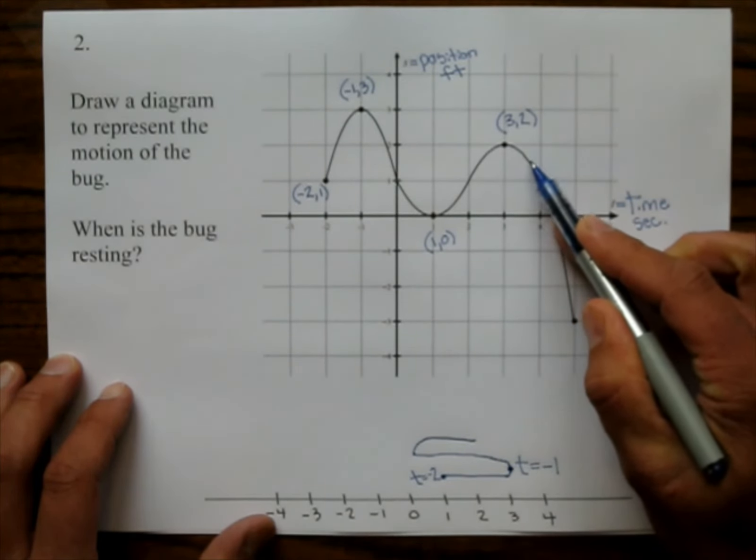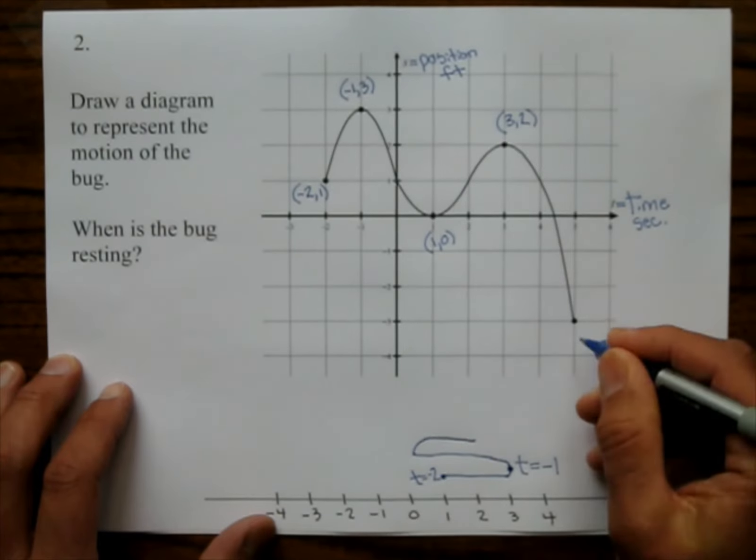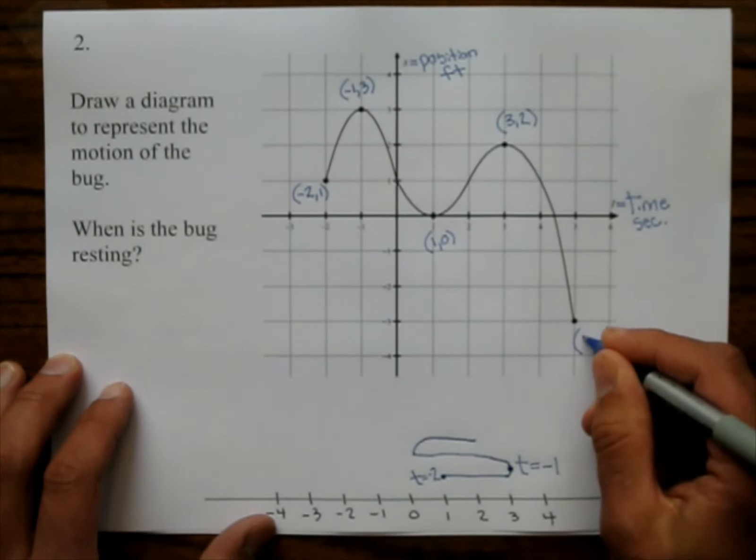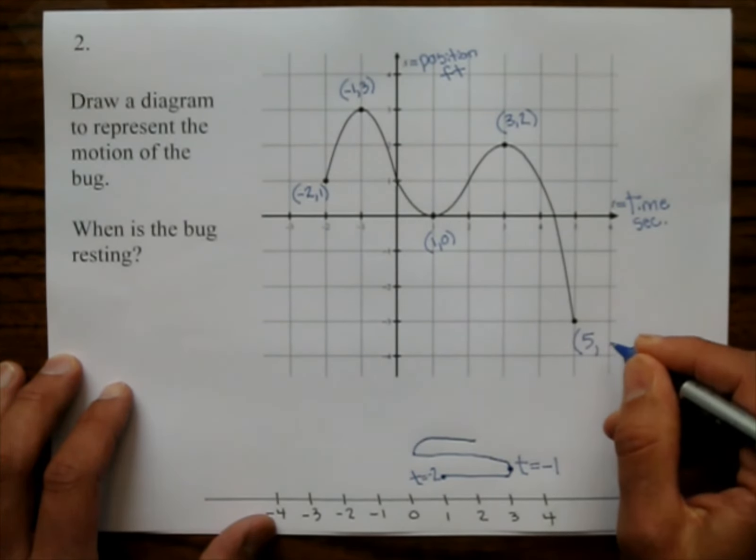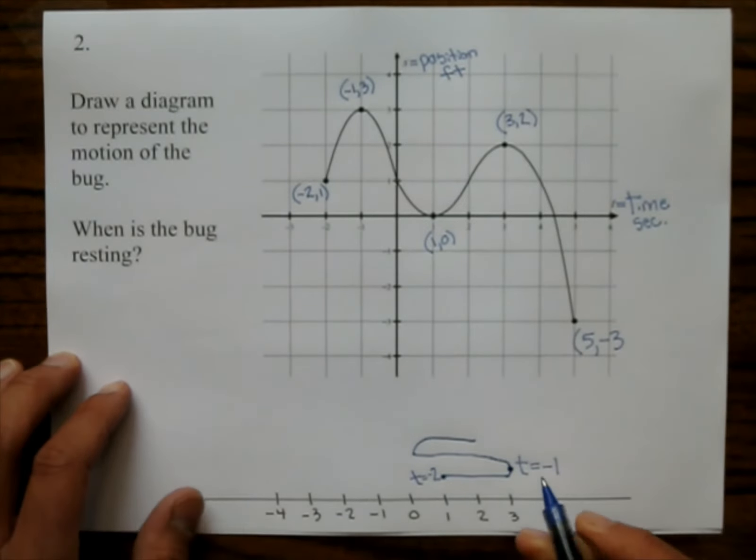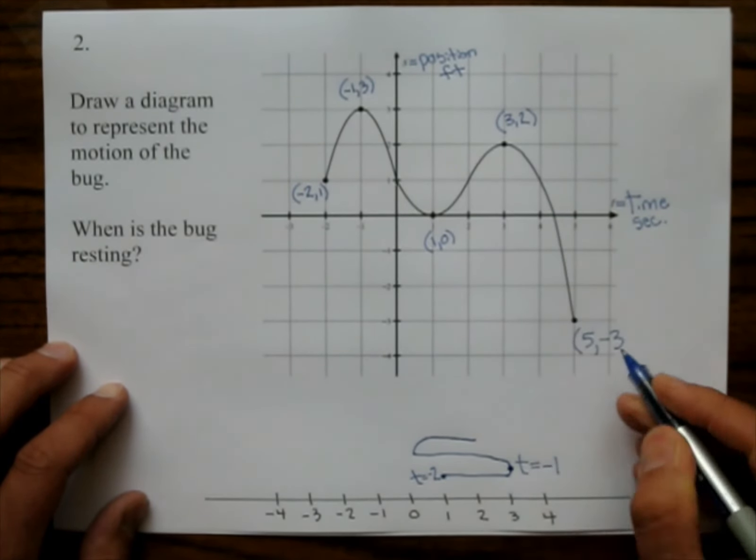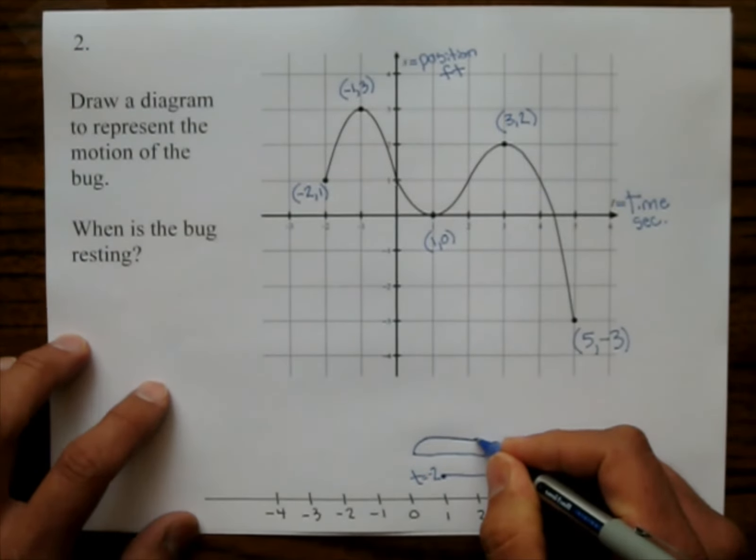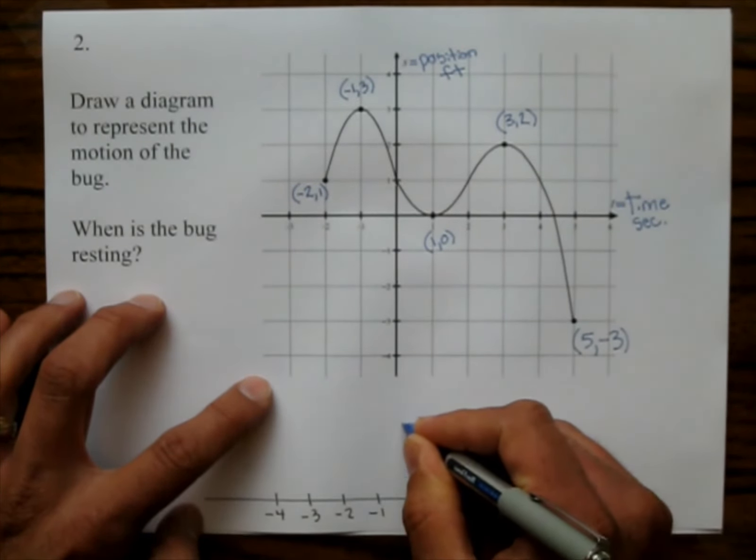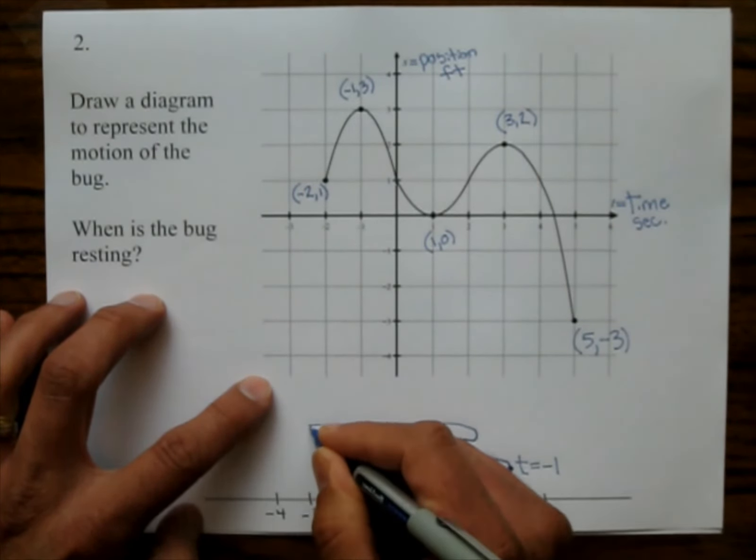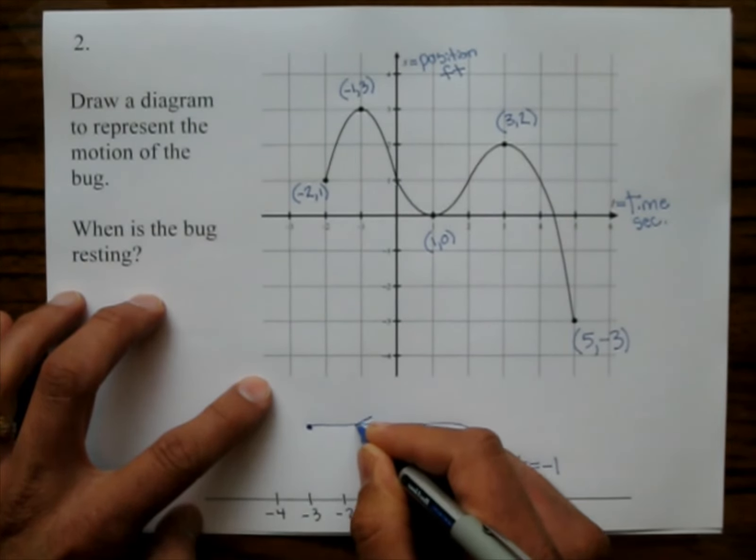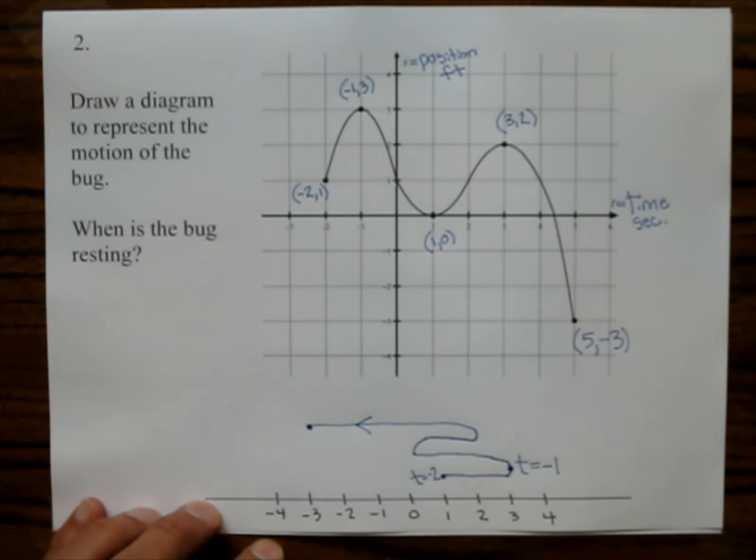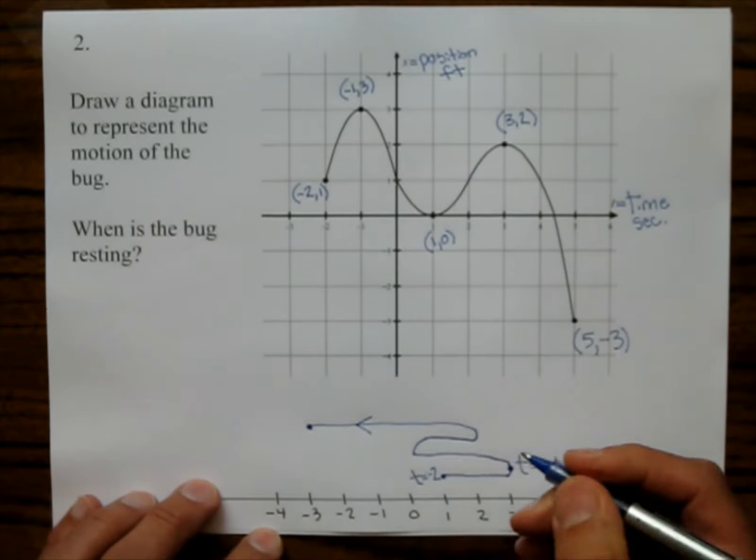Of course, he's going to turn around again. And then let's label this point. This is the point 5, negative 3. He's going to turn around at position 2 and then go to negative 3. You can put a little arrow here to denote that's what the bug's doing. And we should put our turnaround time.